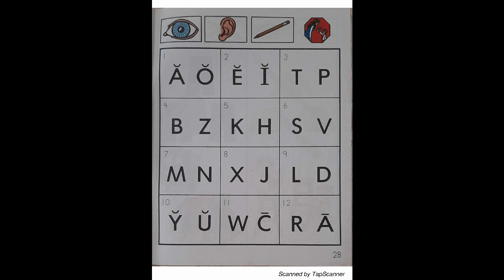Look at the letter in box 9. Listen as I say the sound of the letter: "L" — Lizard — "L". With your pencil, circle the letter that reads "L".